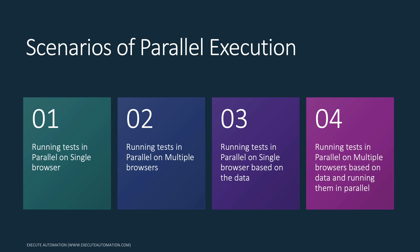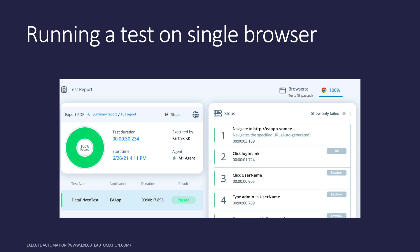These are the different scenarios we can think of while executing our tests in parallel, and that's exactly what we'll be discussing in Test Project and how we can achieve that. Let's see all these scenarios one by one and the time it takes. Running a test on a single browser — the data-driven testing I have created for an EzraAutomation app — if I execute this test with one test data and one single browser, it's going to take like 17 seconds.